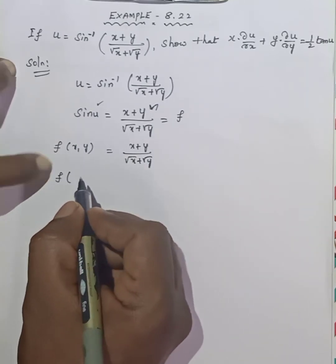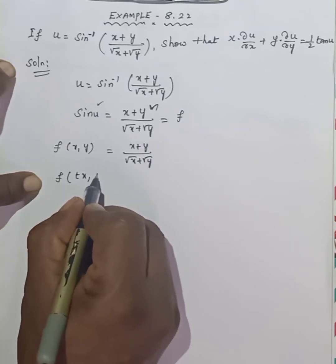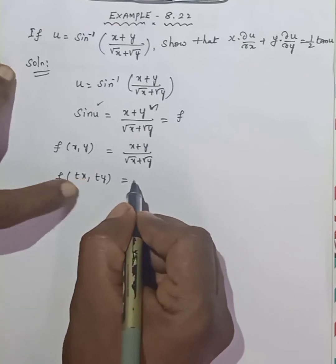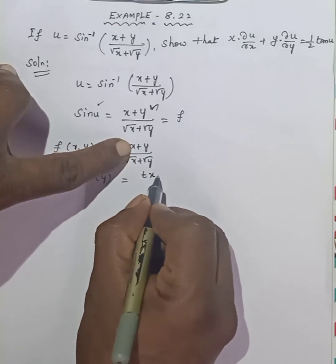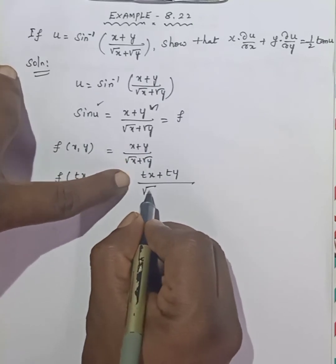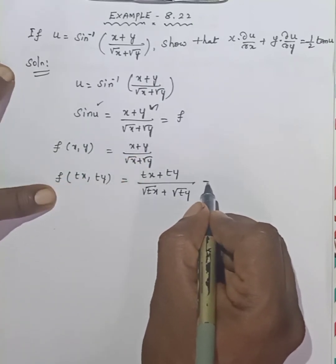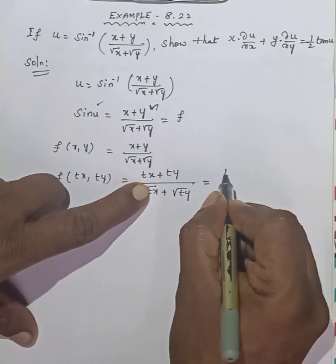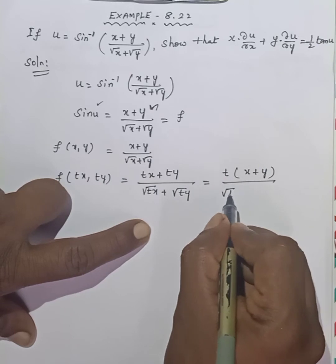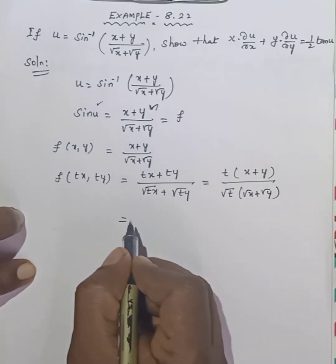To find the degree, substitute tx for x and ty for y. So f(tx, ty) gives (tx plus ty) in the numerator, and root of tx plus root of ty in the denominator. In the numerator, t is common giving t(x plus y). In the denominator, root t is common giving root t times (root x plus root y).